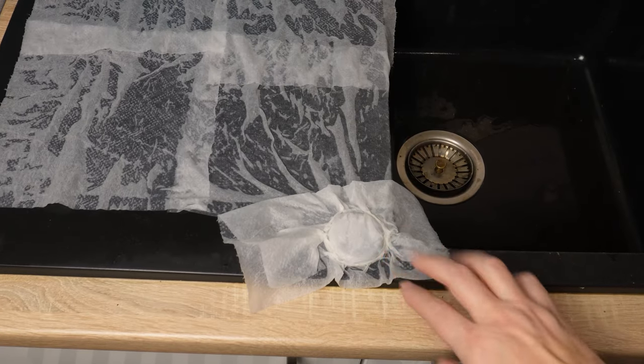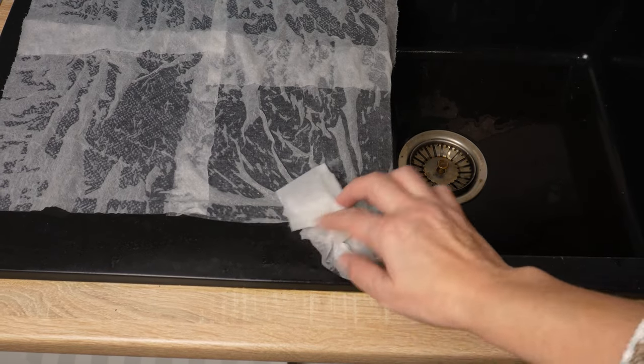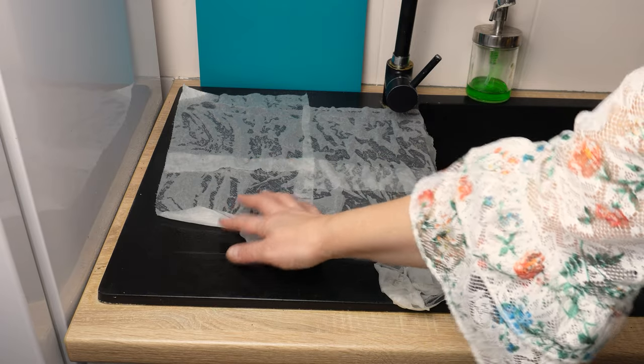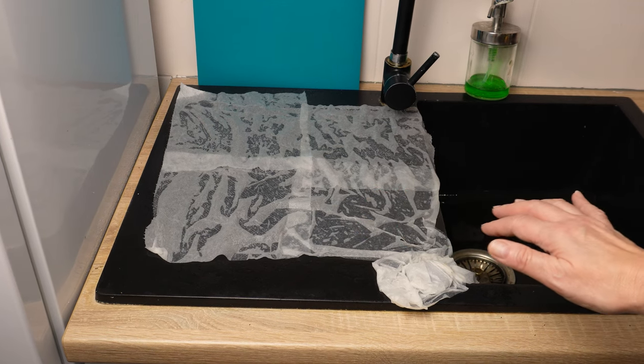Place pieces of paper towel on the damp sink and spray vinegar again. It's important for the paper towels to be completely wet. This way, the vinegar won't evaporate, and it will work longer, removing the white spots. Leave the paper for several minutes.